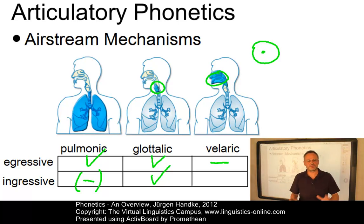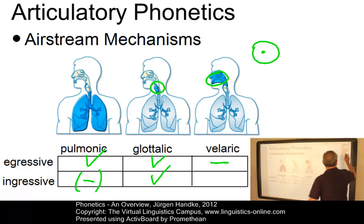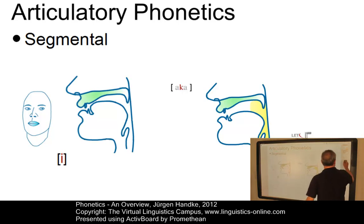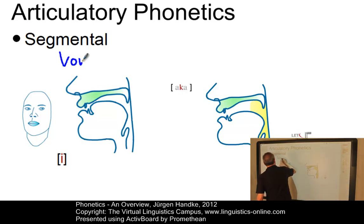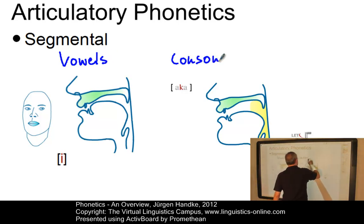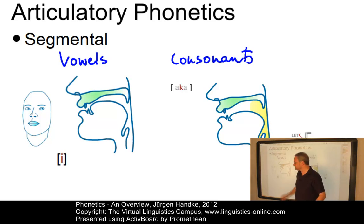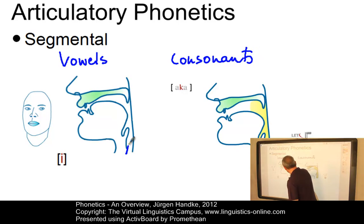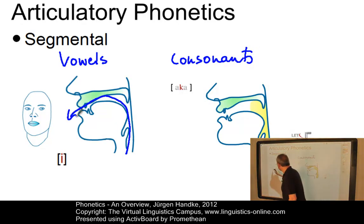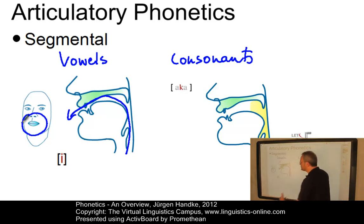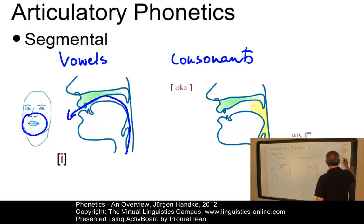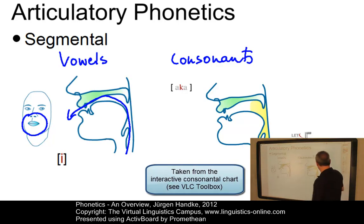The combination of anatomical properties and the respective airstream allows us to precisely define all speech sounds used in natural language, where two types can be differentiated: vowels and consonants. Vowels allow an almost free passage of air through the vocal tract — the example here is 'ee,' where the airstream passes freely and the lips have to be spread. Consonants, by contrast, involve some sort of obstruction to the airstream in the vocal tract, as in K — 'aka' — where some sort of closure has been created.